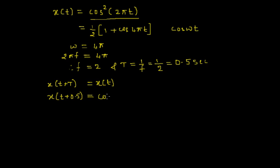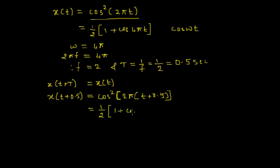x(t + 0.5) equals the given signal cos²(2π(t + 0.5)). Replacing t with t + 0.5, this can again be written as ½(1 + cos(4π(t + 0.5))).